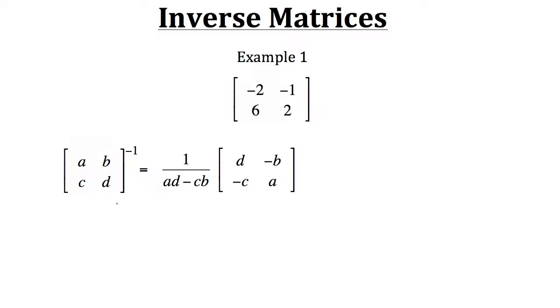So let's take this formula and apply it to our matrix from example one. We'll put in the values for a, b, c, and d. So we'll have negative 2, negative 1, 6, and 2. Now at this point, the first thing we want to do is find the determinant for our matrix.